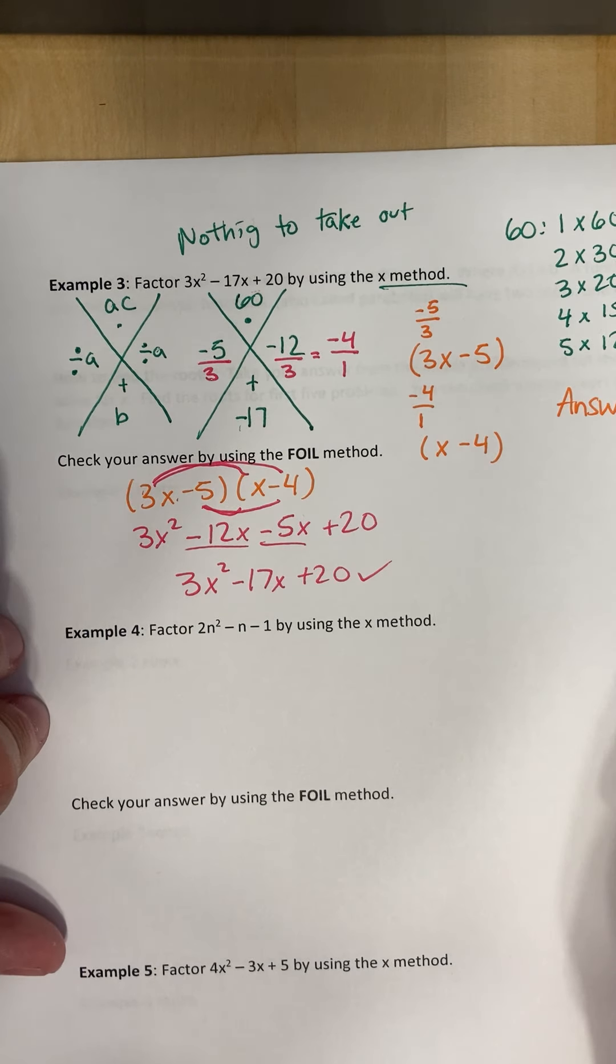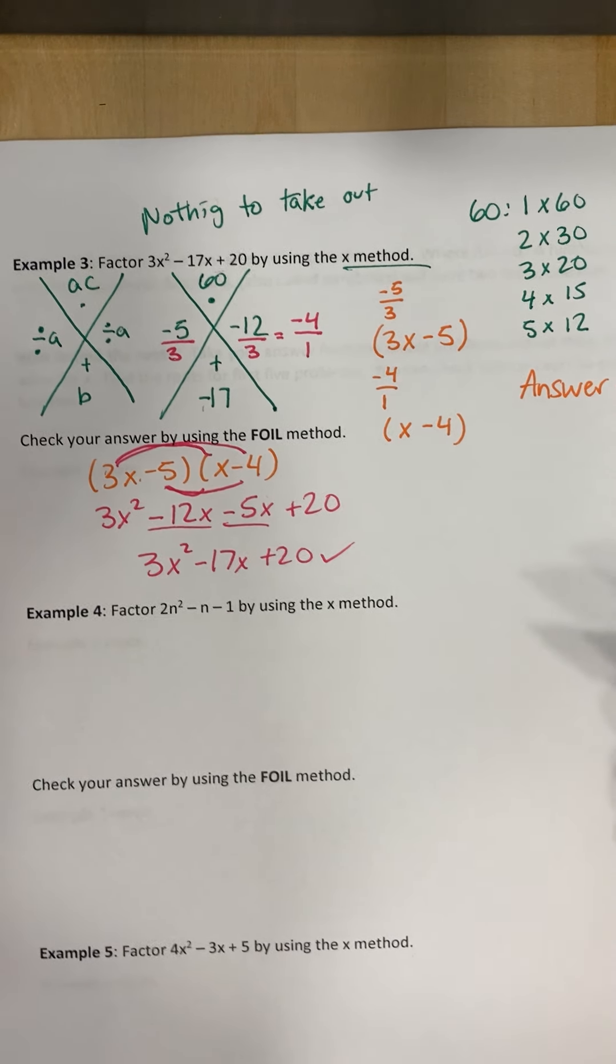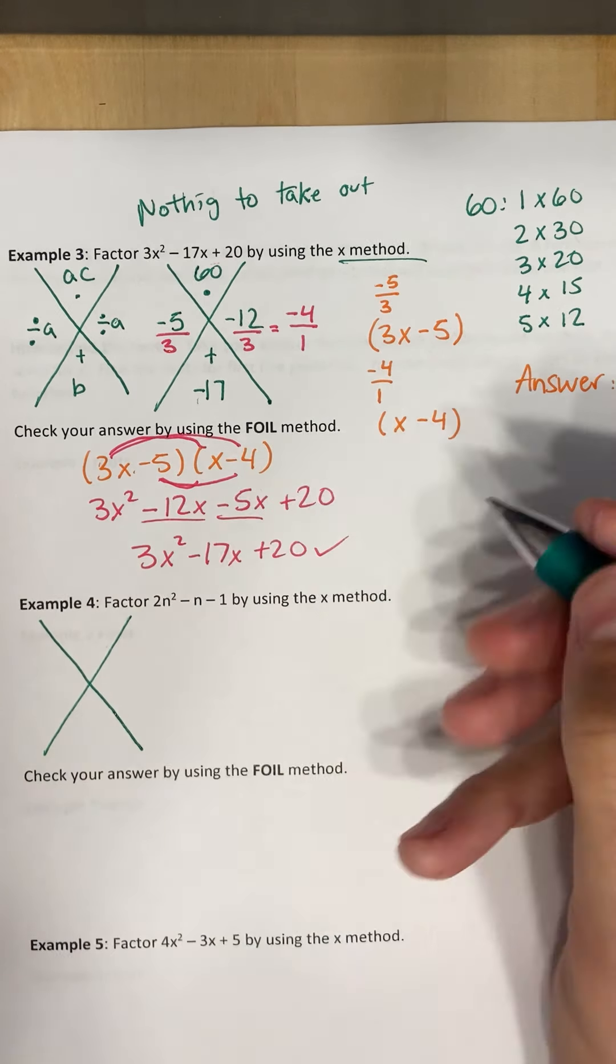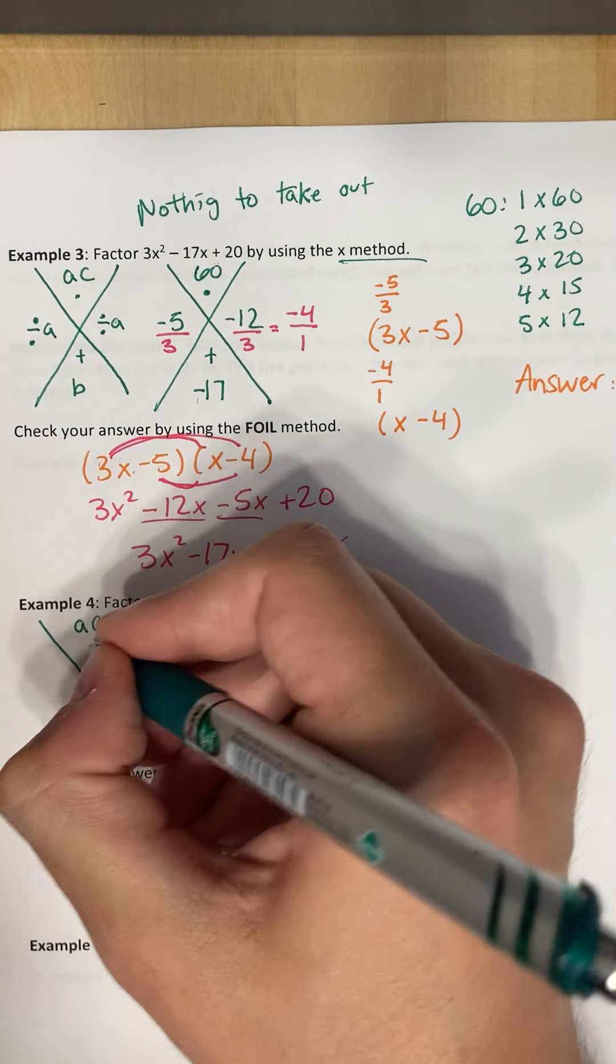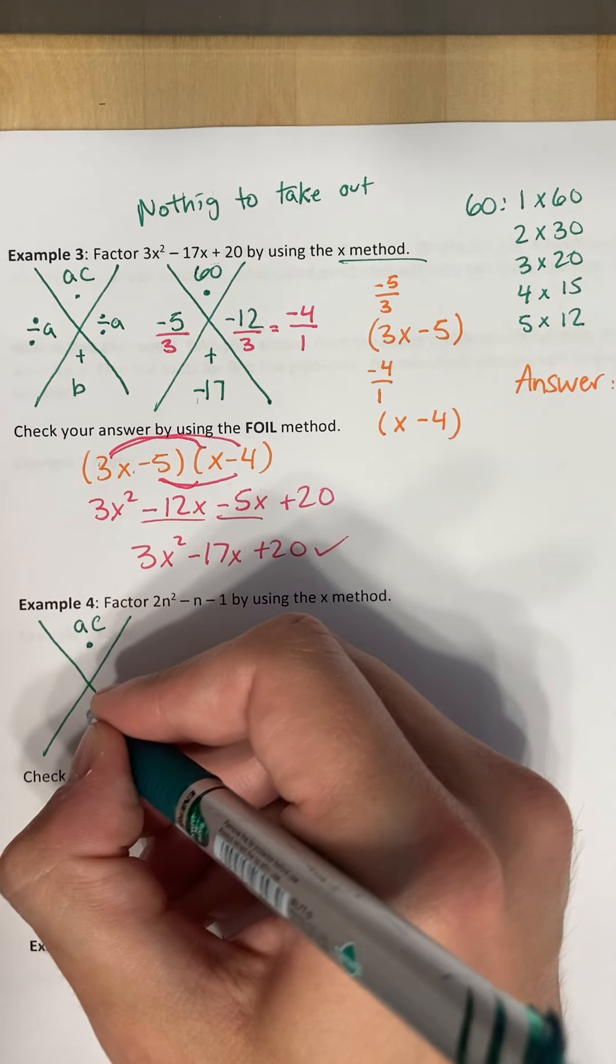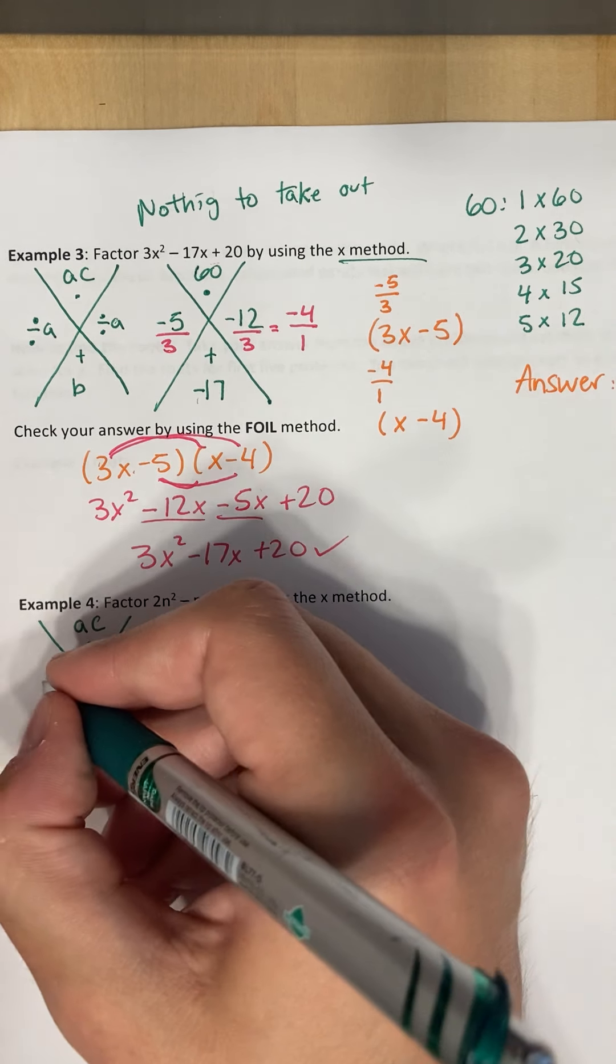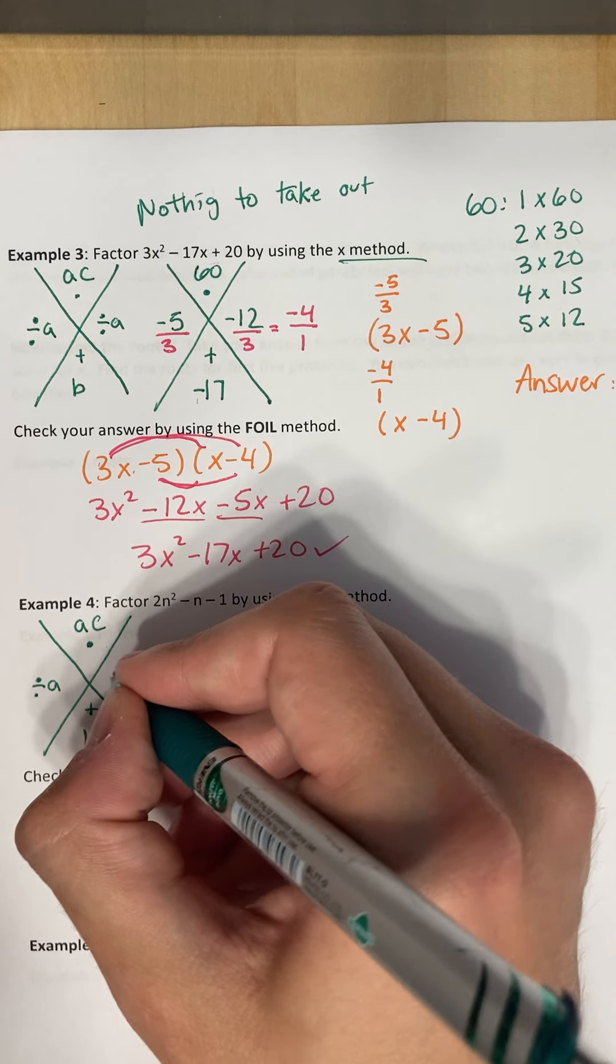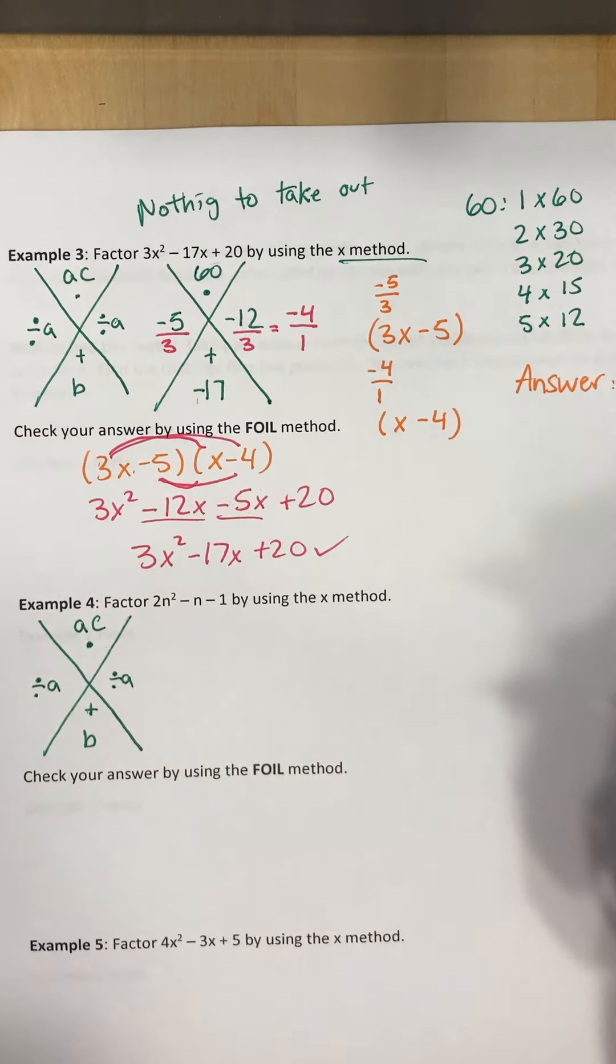All right, welcome back to part two. Let me make sure we're good. Let's come back to our x method. So I'll draw our x here, and a times c is going to be here. We want these to multiply, and b is going to be here. We want these to add, and then we want to divide by a, divide by a, once we figure out what that number is.